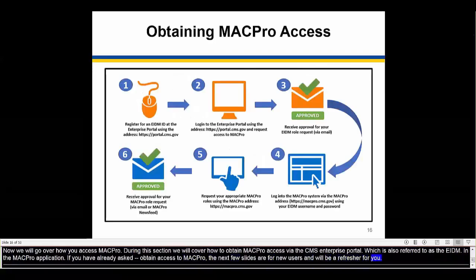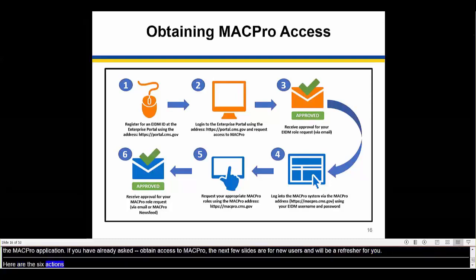Here are the six main actions that new users need to take to obtain access to MACPro. The first three steps, noted in orange, are to be completed in the Enterprise Identity Management System, or EIDM. The second three steps, in blue, are done in the MACPro system. Let's talk about the first portion and EIDM.